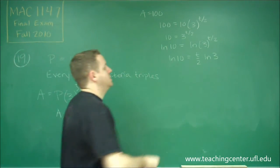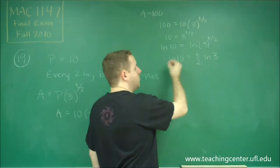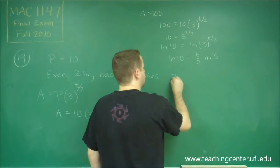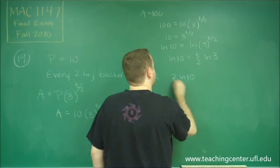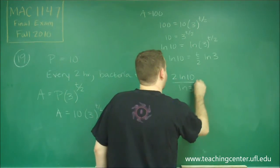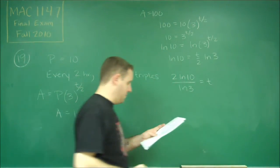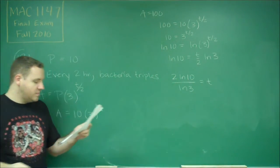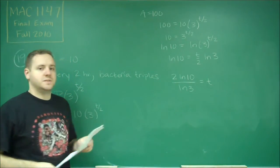And then finally solving for t, we just need to divide by ln of three multiplied by two. So we're going to get two ln of ten divided by ln of three. And that gives us then answer choice D.